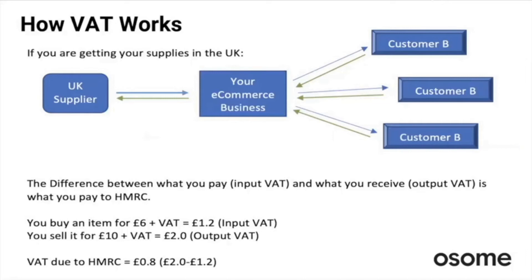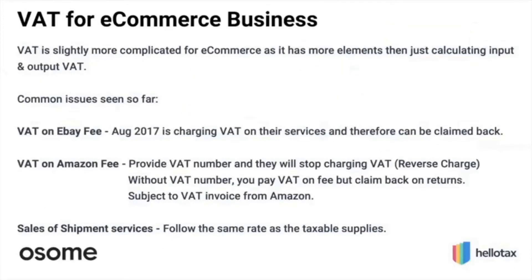Now let me explain how the actual VAT calculation works. Using a basic example: you have a UK supplier, your UK e-commerce business, and UK customers. You get products from your UK supplier and pay them — let's say you receive an invoice for £7.20, which is £6 plus VAT, meaning £1.20 is the VAT element you paid to your supplier. On the other side, when you sell that item to your customers, you charge £10 plus VAT — a total of £12. You collect that extra £2 for HMRC and record £10 as your sales. The VAT due to HMRC is 80 pence — the difference between what you collected and what you paid, i.e., the difference between input VAT and output VAT. That 80p is what you need to pay back to HMRC by the end of your period.